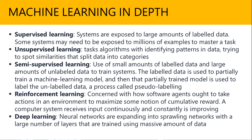And finally, we have deep learning, where we get into neural networks that are expanding into other networks with a large number of layers. The more layers you have within deep learning, the more effective the outcome will be. They are trained using massive amounts of data — millions and millions of images. So that's a high-level overview of machine learning types.